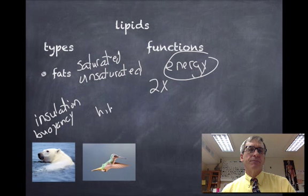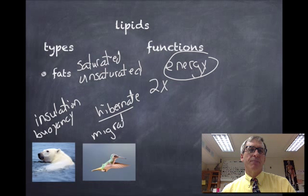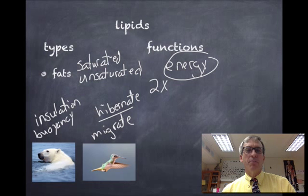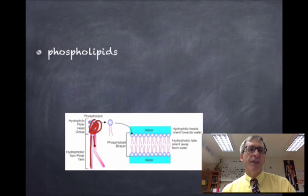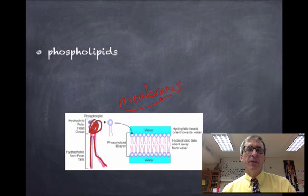Animals that are going to hibernate will eat a lot beforehand and store the excess energy as fat, giving them the energy to hibernate. Animals like this hummingbird that need to migrate — a hummingbird will fly from Maryland to South America — will actually double their body weight with fat, giving them the energy for that long migration. Phospholipids are another key type of lipid. They have a phosphate head and two fatty acid tails, and they arrange themselves to form membranes. Because of their interesting structure, it gives membranes the ability to control what enters and leaves a cell.